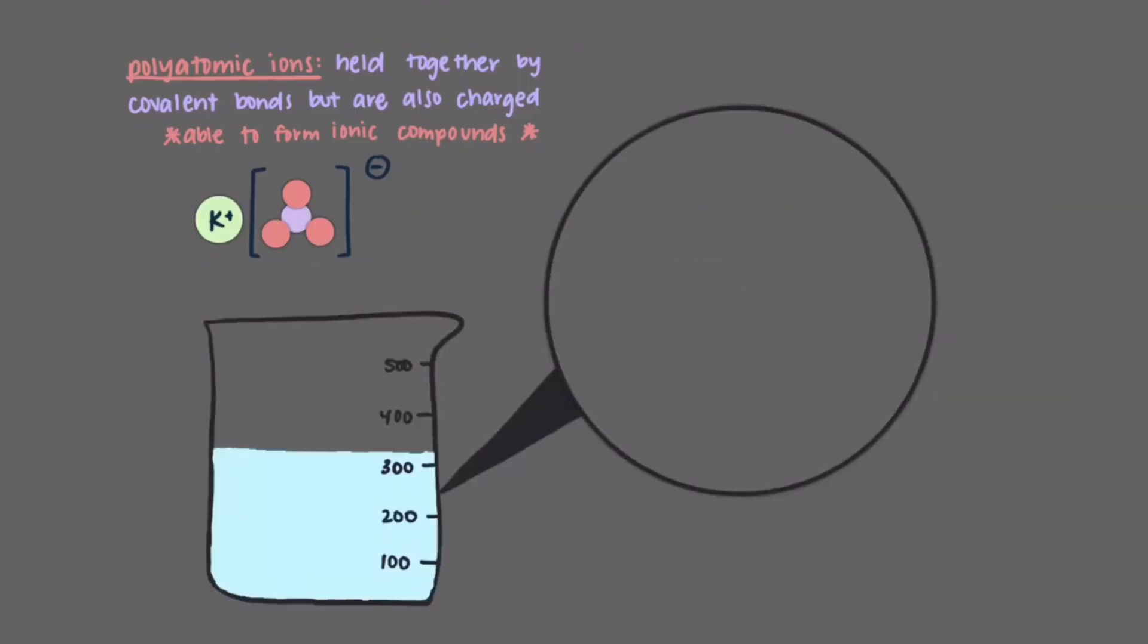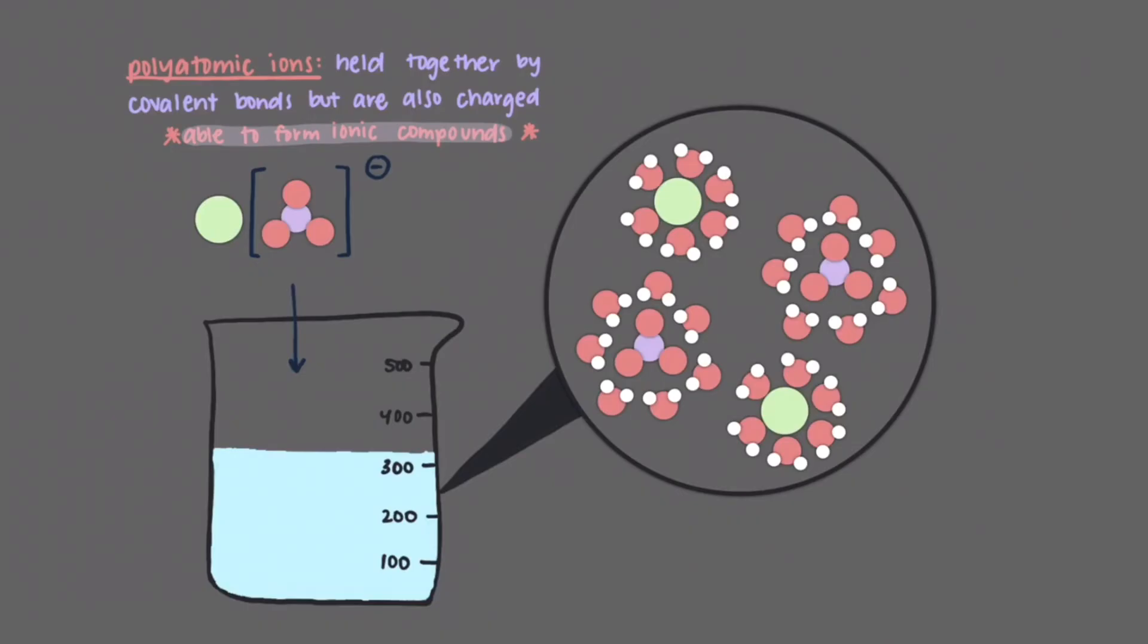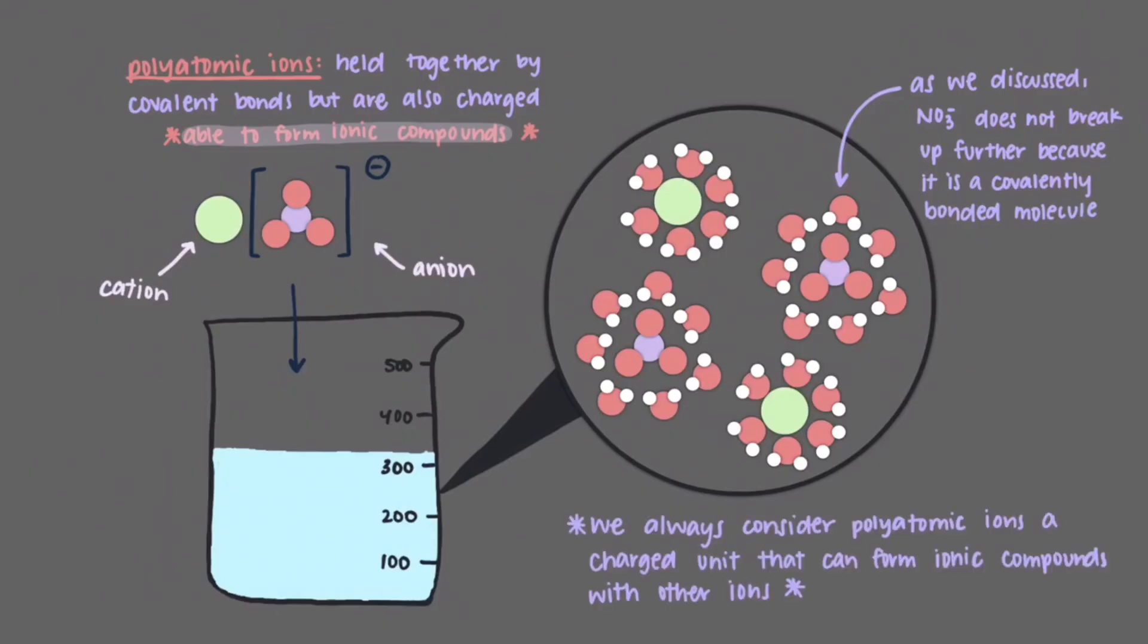Because we've already said that polyatomic ions interact with ions to form ionic compounds, potassium nitrate, an ionic compound, will break up into ions when dissolved. Potassium is the cation and the anion is nitrate as a whole. Nitrate will not break up further because these atoms are held together by covalent, sigma and pi bonds, and we've just learned that covalent compounds stay together even when dissolved in water. So we always consider polyatomic ions a charged unit that can form ionic compounds with other ions.